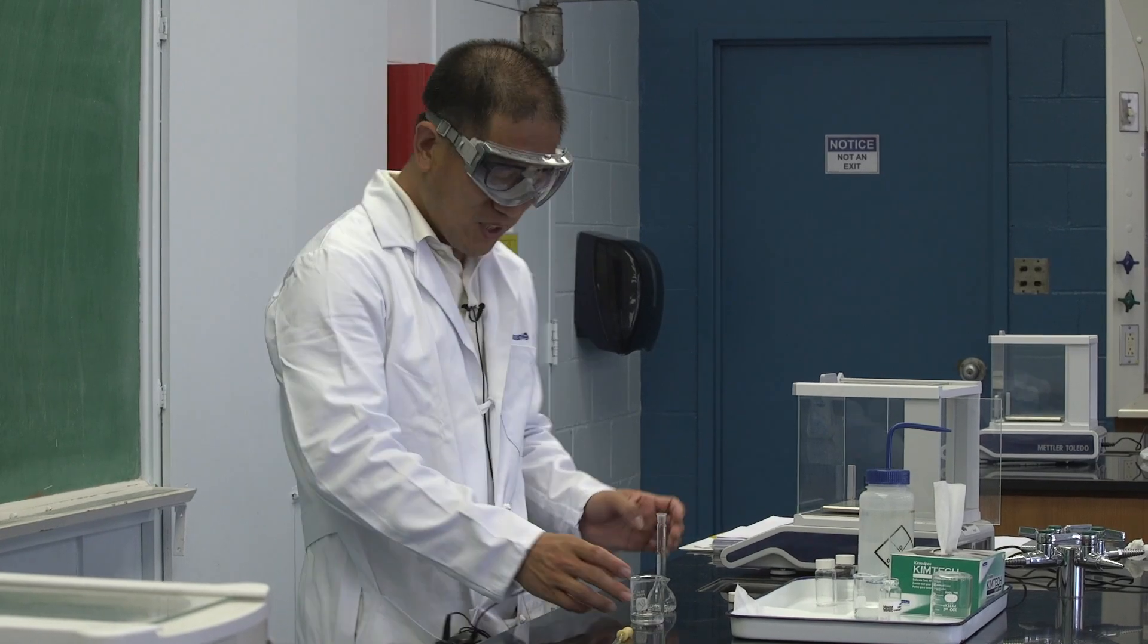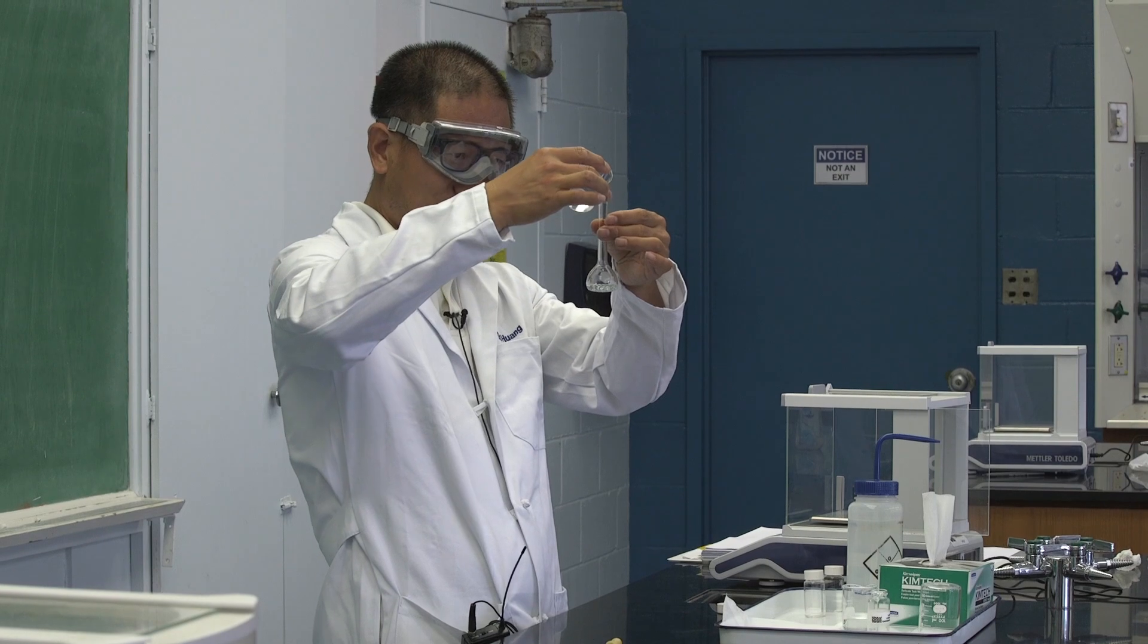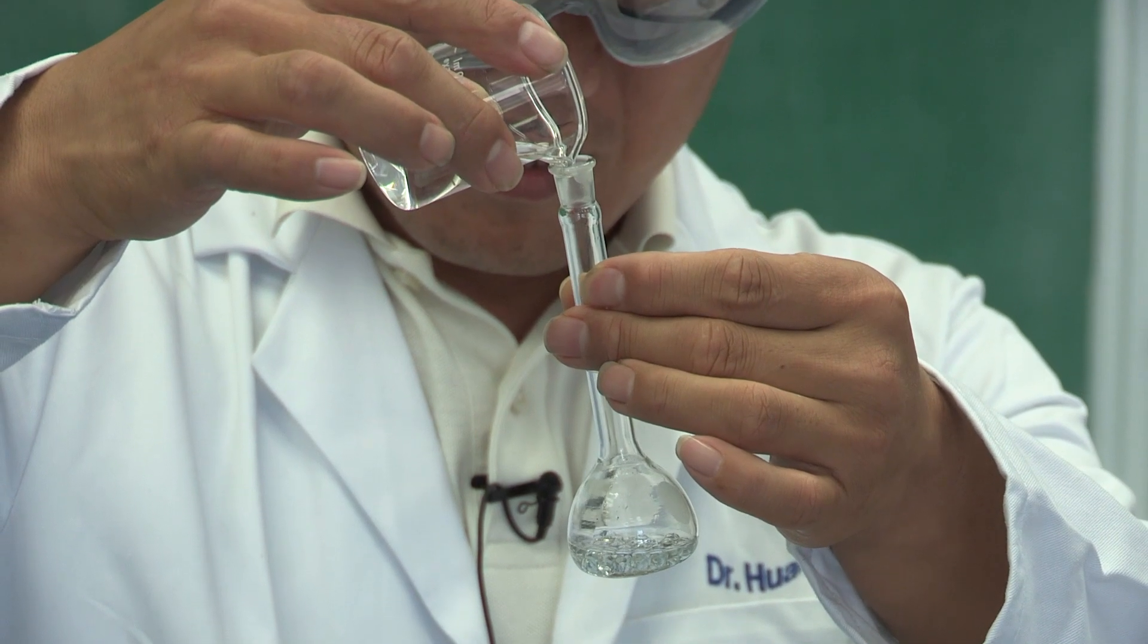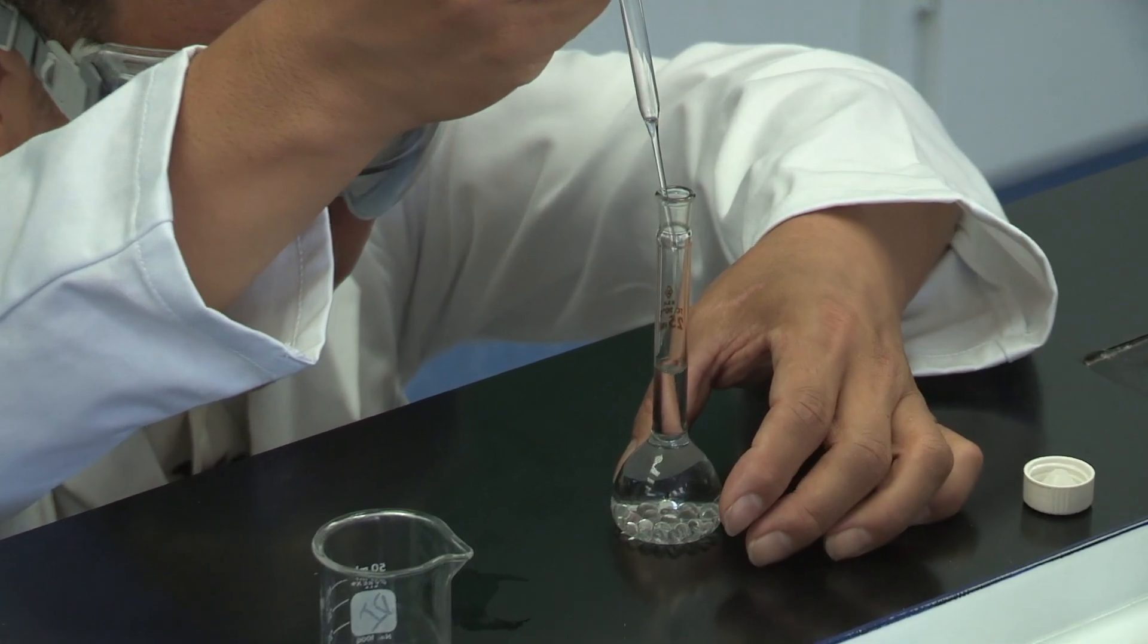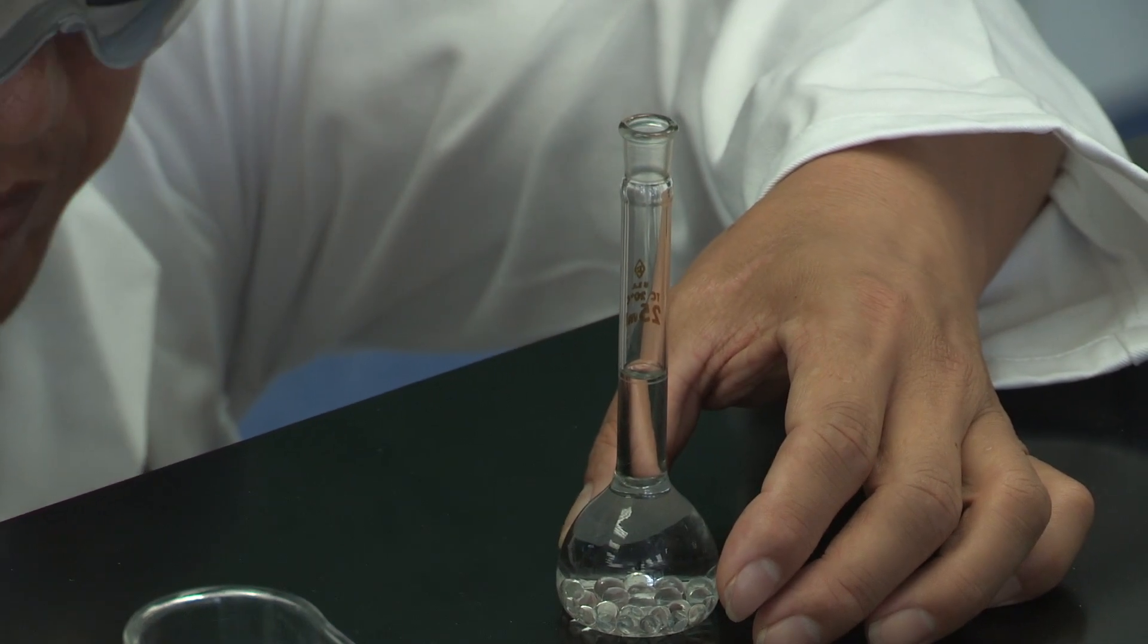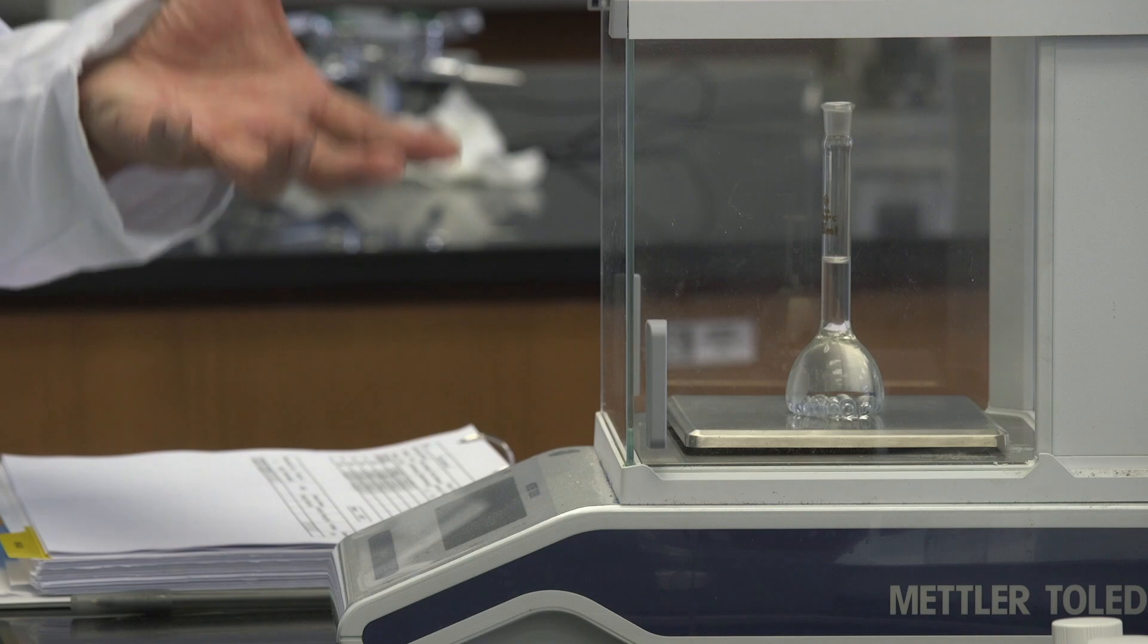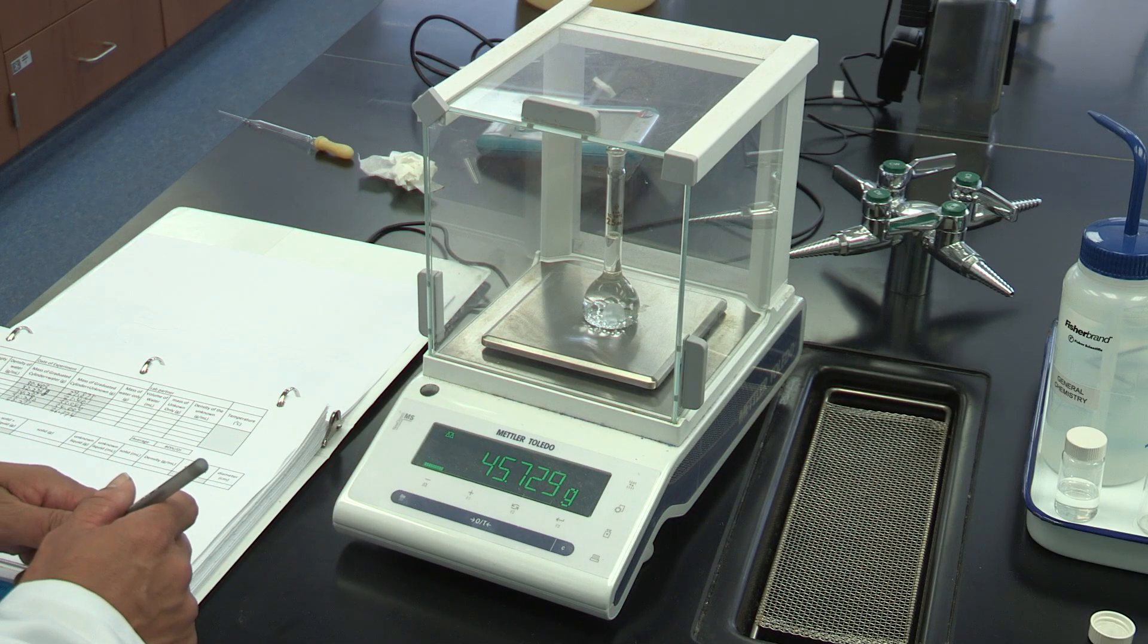Then, we add some unknown liquid to the volumetric flask. Then, we will get the total mass, everything together, which includes the flask, the bead, and the unknown liquid. The reading is 45.729 grams.